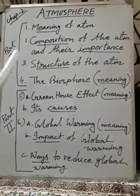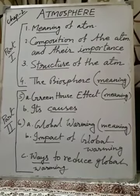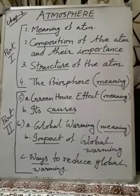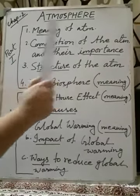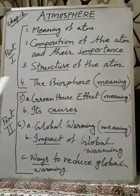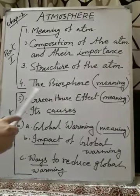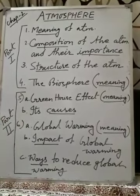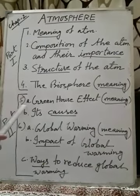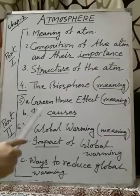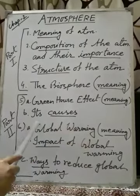First, write down exactly what we are going to know from this chapter. Number 1: we are going to know the meaning of atmosphere. Number 2: composition of the atmosphere and their importance. Number 3: structure of the atmosphere. Number 4: the biosphere - we are going to know the meaning of this layer. Number 5: it has two parts, A and B. Number 6: greenhouse effect - we are going to know the meaning of this word and its causes.